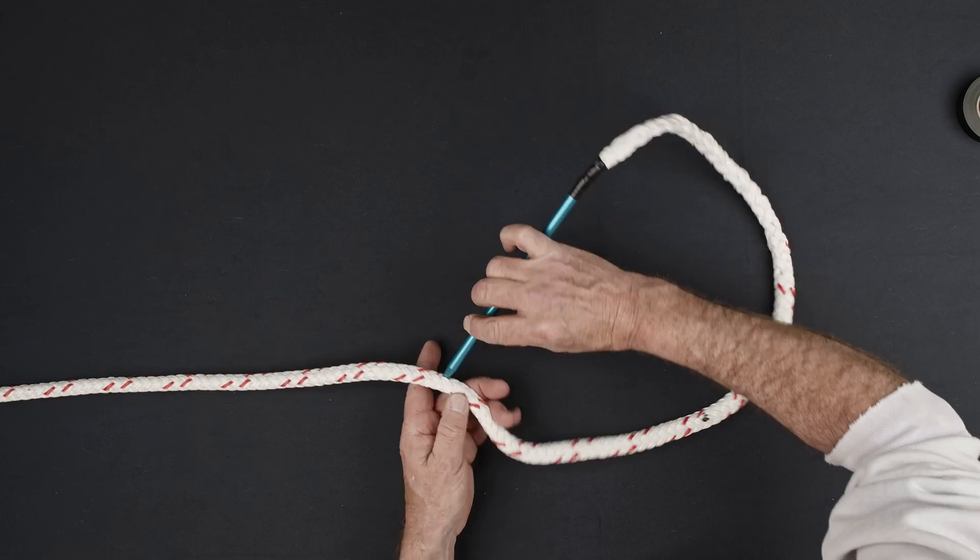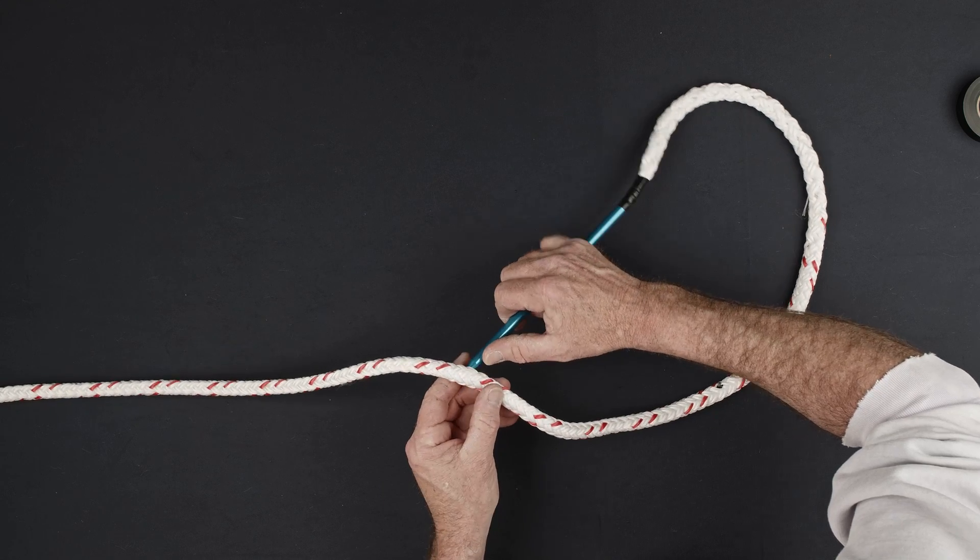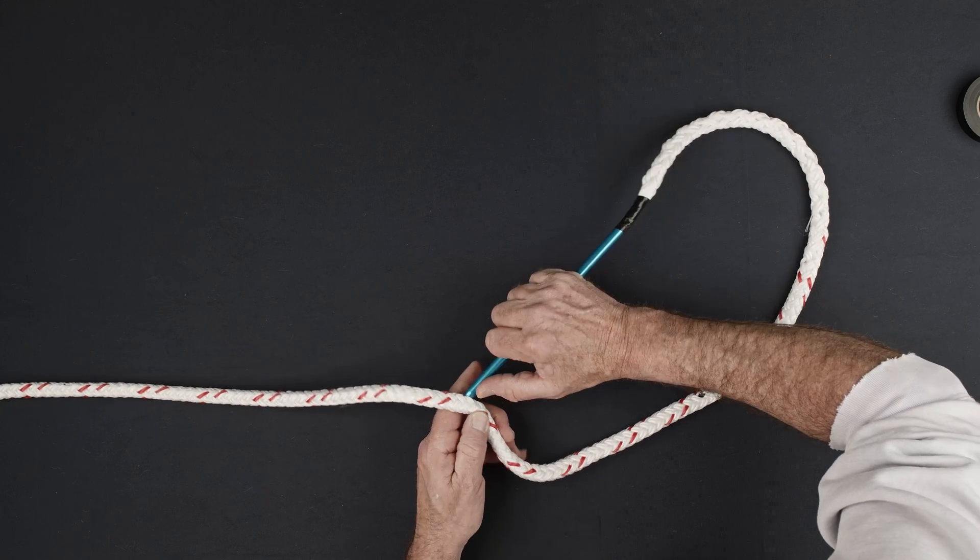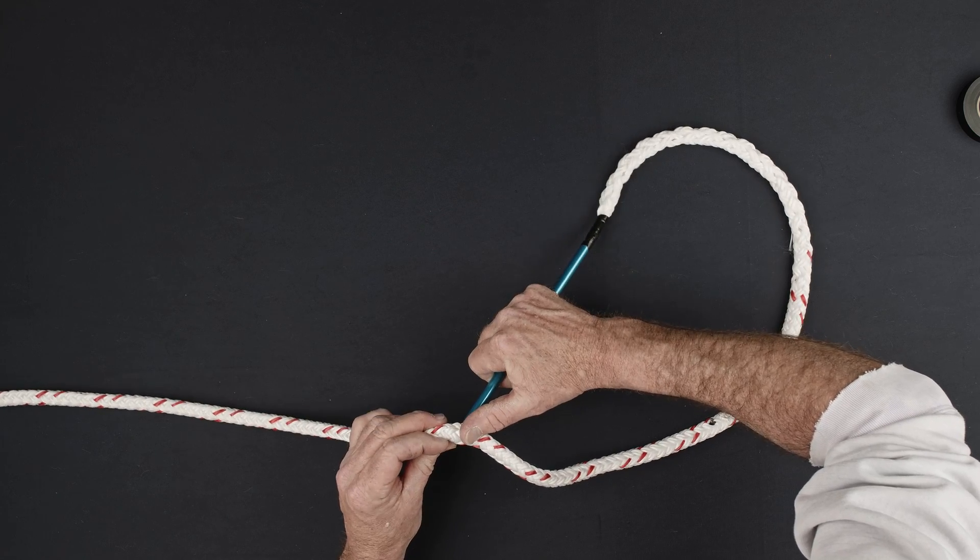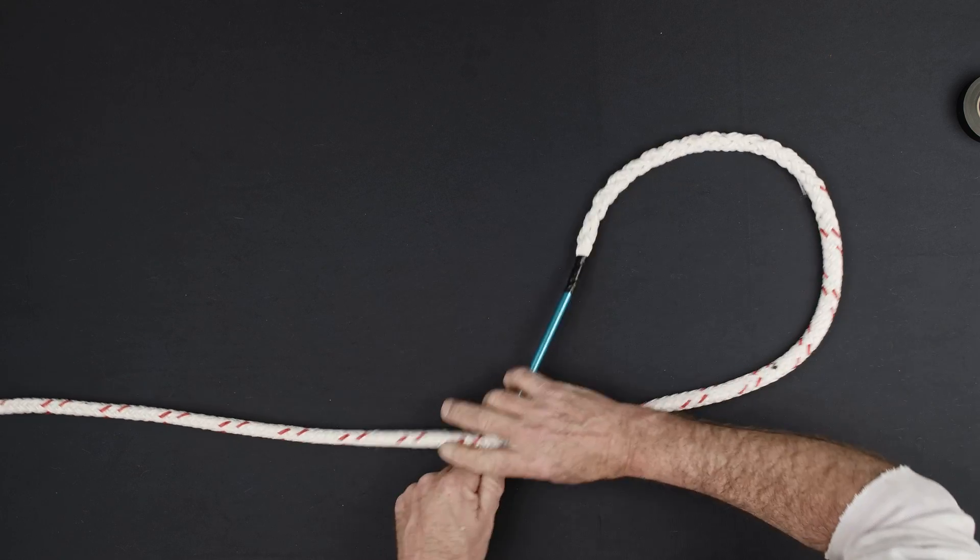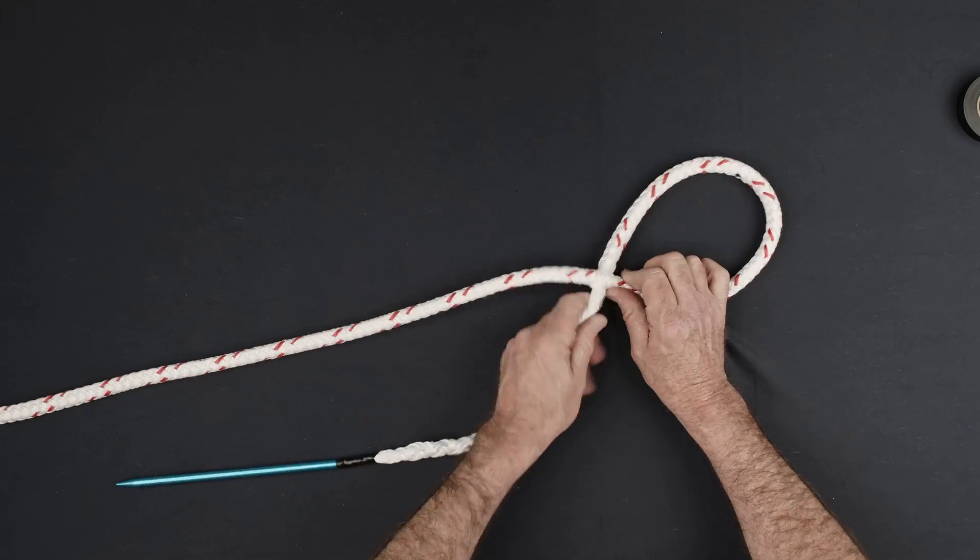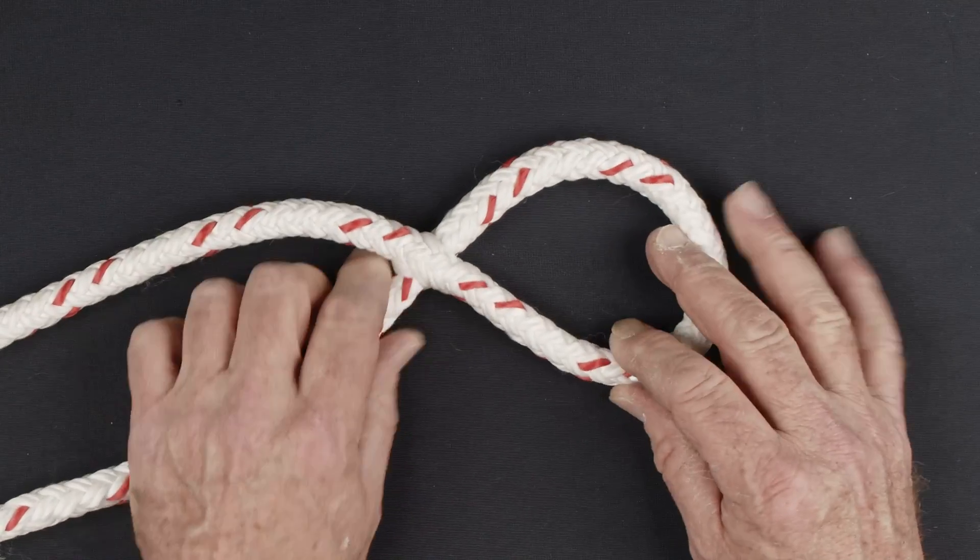Pass your fid through the center of the rope at the second eye mark, being careful not to split any of the strands and to have an equal number of strands on opposite sides of the fid. Pull the tail of the splice through and align the first and second eye mark.